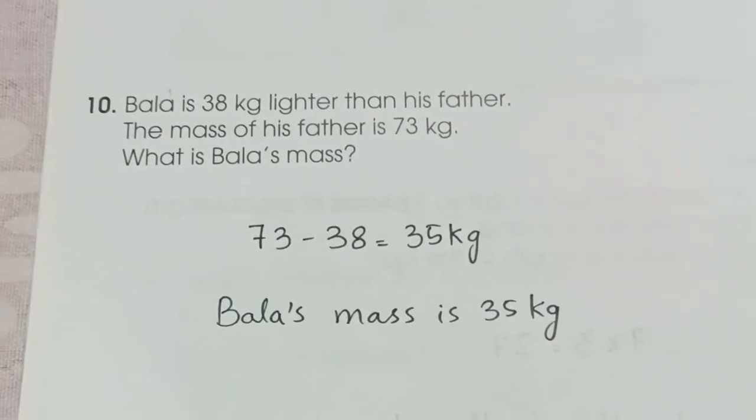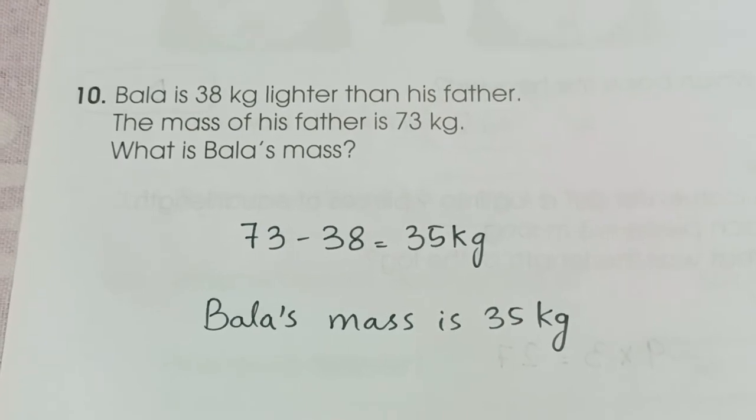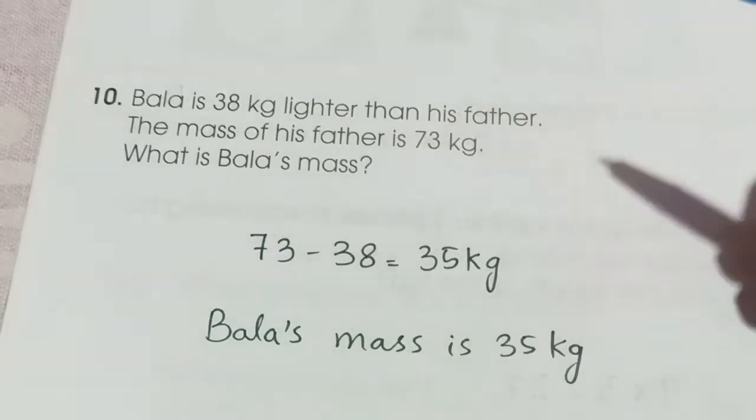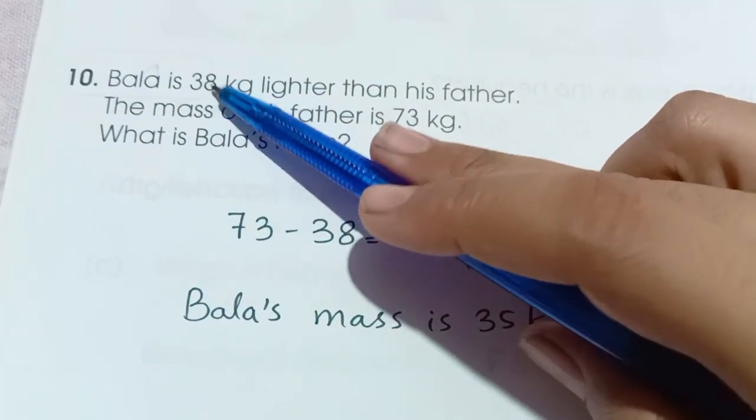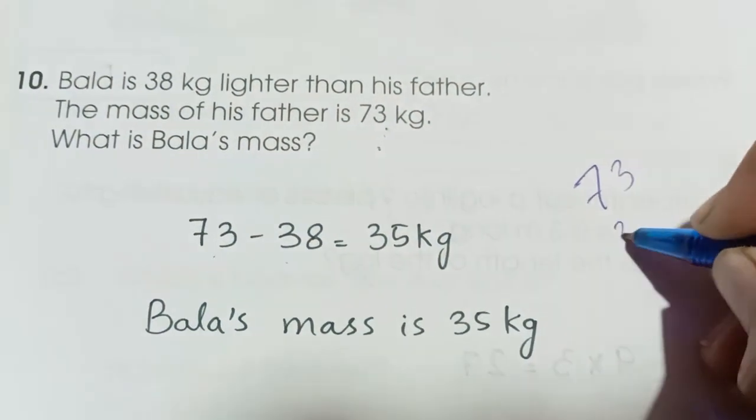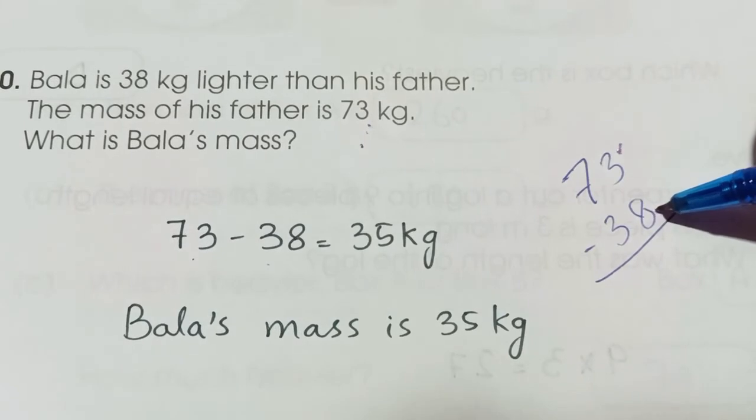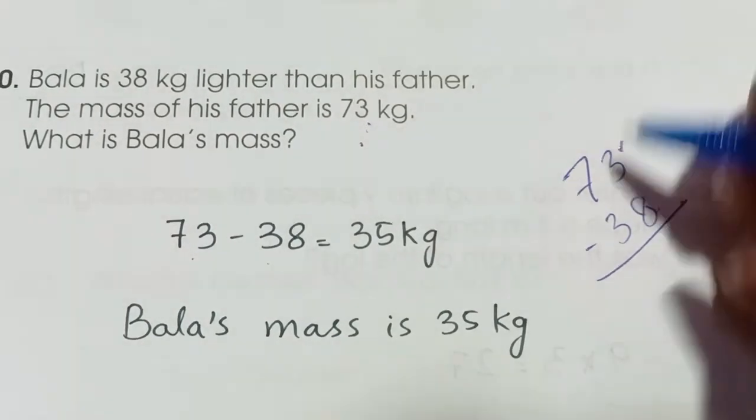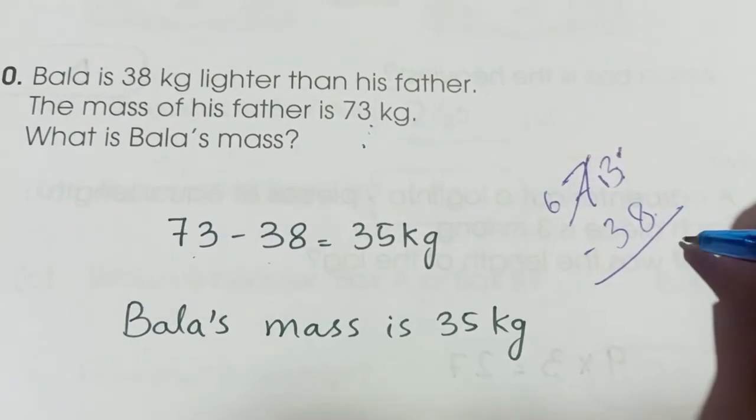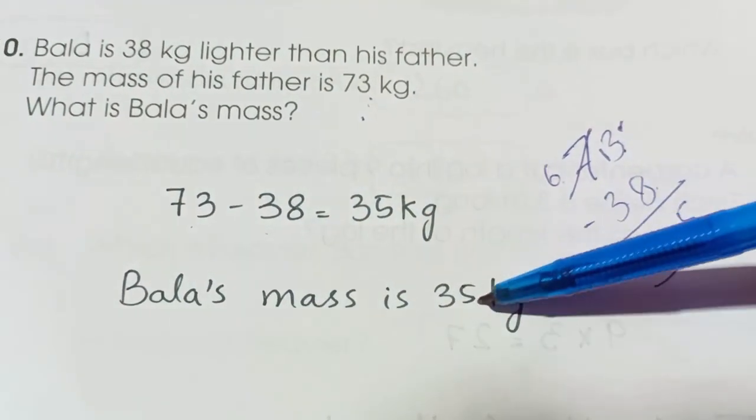Last question of revision 2B. Bala is 38 kilograms lighter than his father. The mass of his father is 73 kg. What is Bala's mass? So we have to subtract the lighter weight of Bala from his father's weight. 73 minus 38. 73, 38. As we can see that 3 is smaller than 8, we cannot subtract this. So we are going to take the borrow. 6, 13. 13 minus 8 is 5. 6 minus 3 is 3. So it means Bala's mass is 35 kg. Thank you.